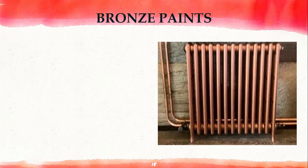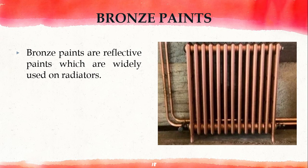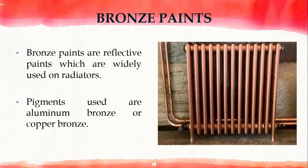Next are bronze paints. Bronze paints are reflective paints widely used on radiators. They can be used for internal or external metal structures. The general binder used in bronze paints is nitrocellulose lacquer. Pigments used are aluminum bronze or copper bronze.